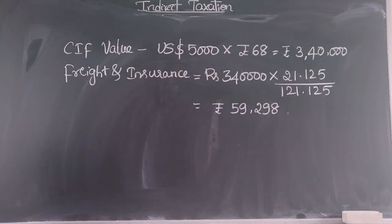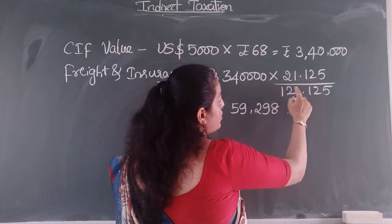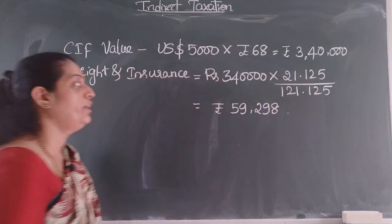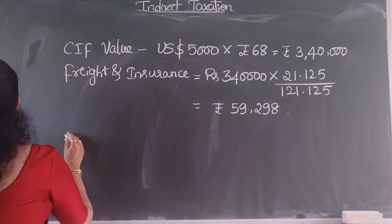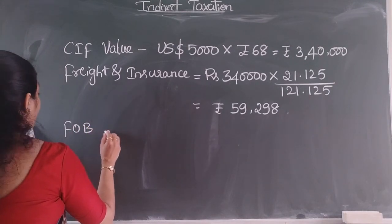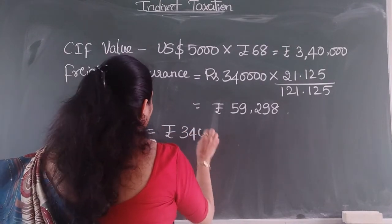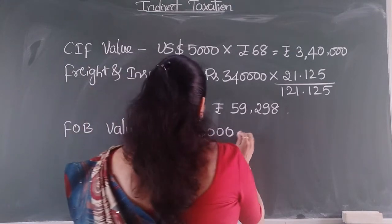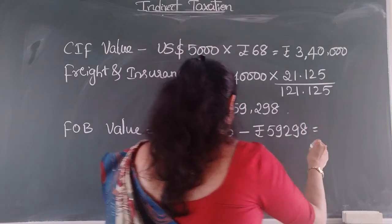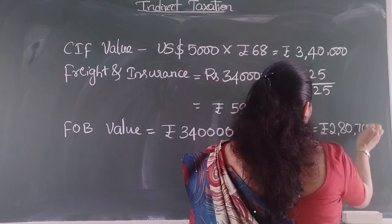Since freight and insurance values were not given, we took 20 percent plus freight charges of 1.125 percent — so 21.125 divided by 121.125 — to find the freight and insurance component. Then the FOB (free on board) value becomes rupees 3,40,000 minus rupees 59,298, which gives rupees 2,80,702.